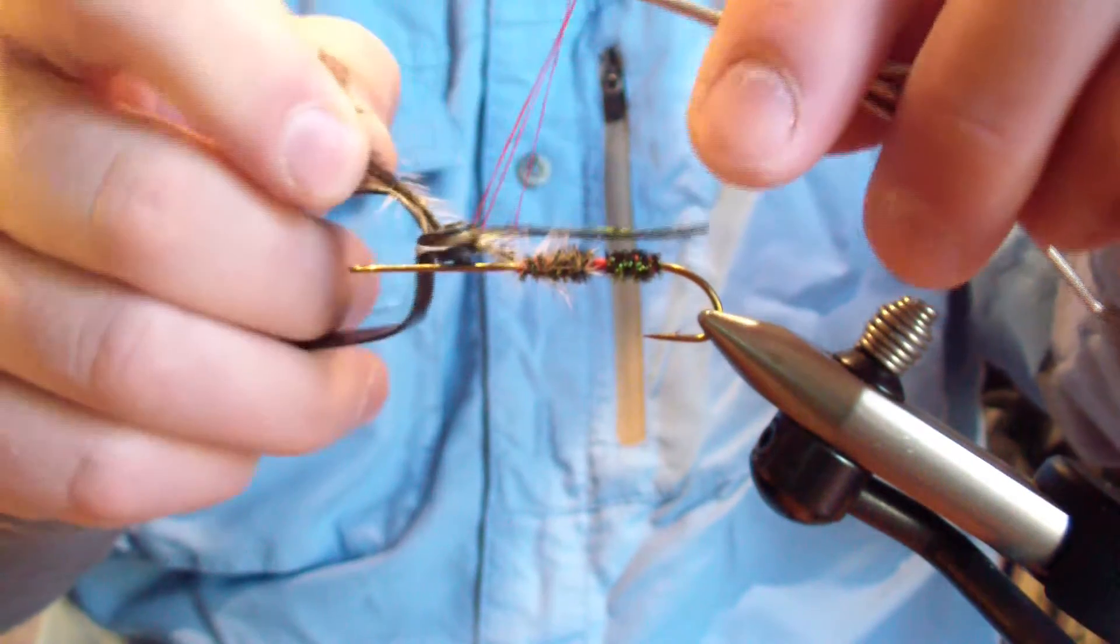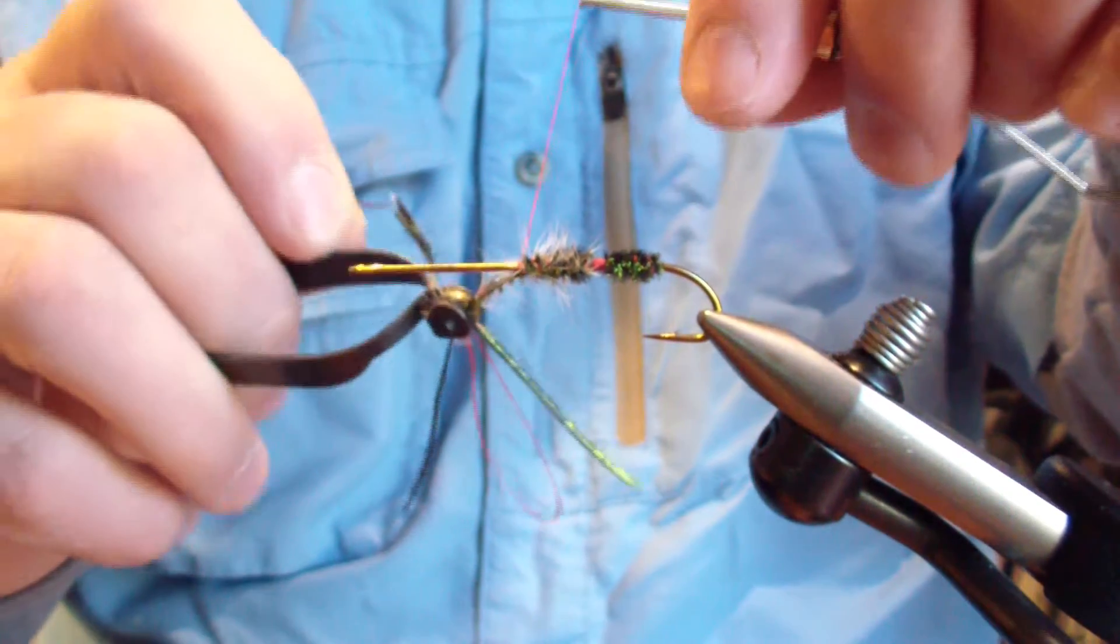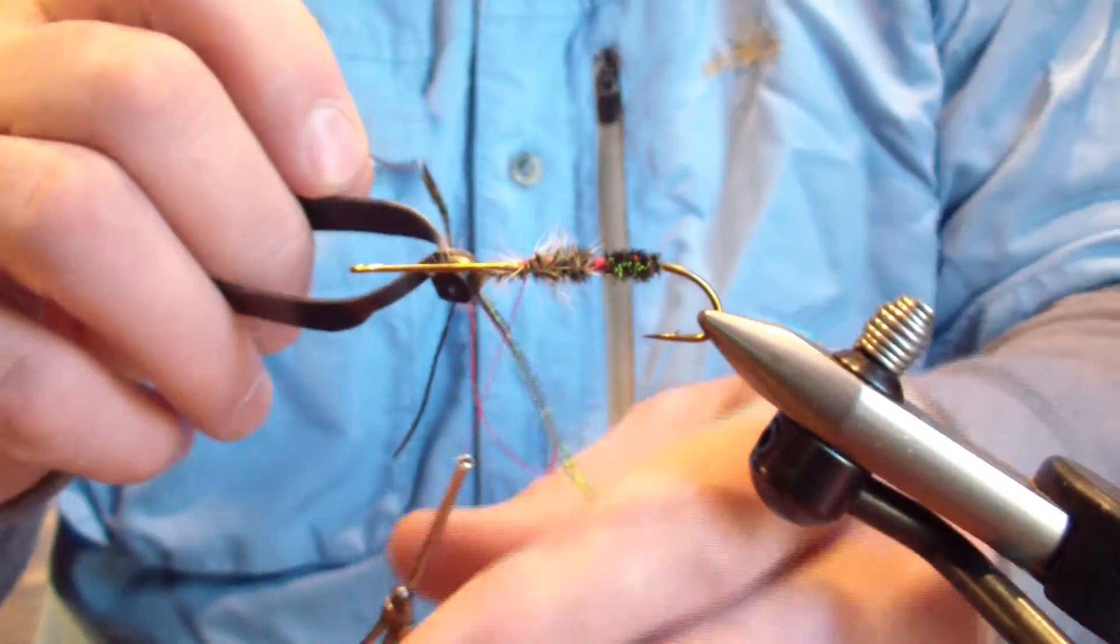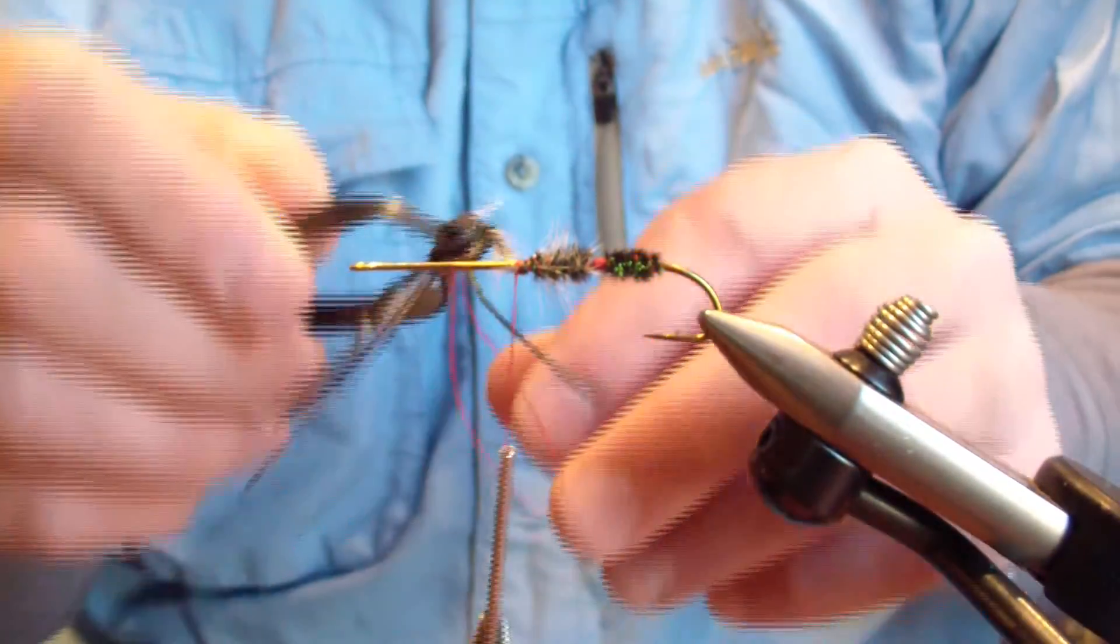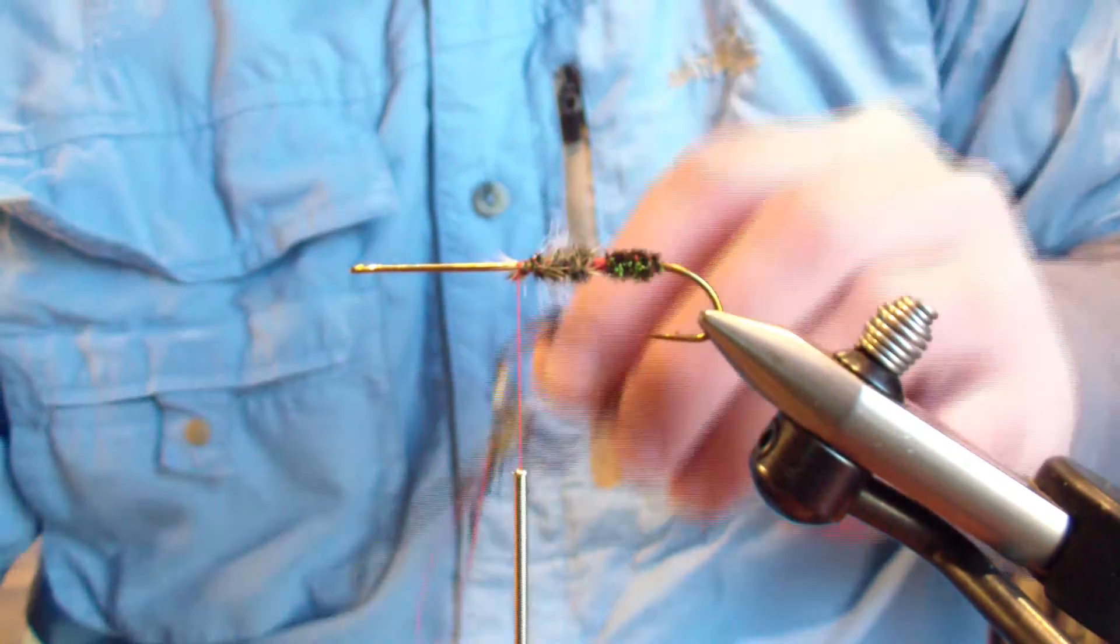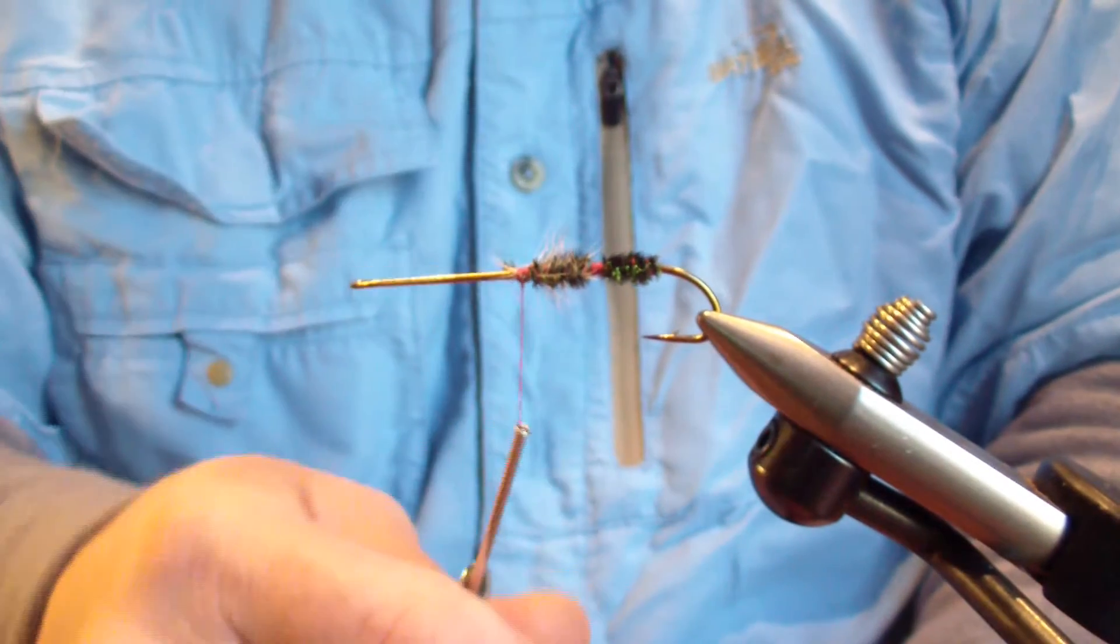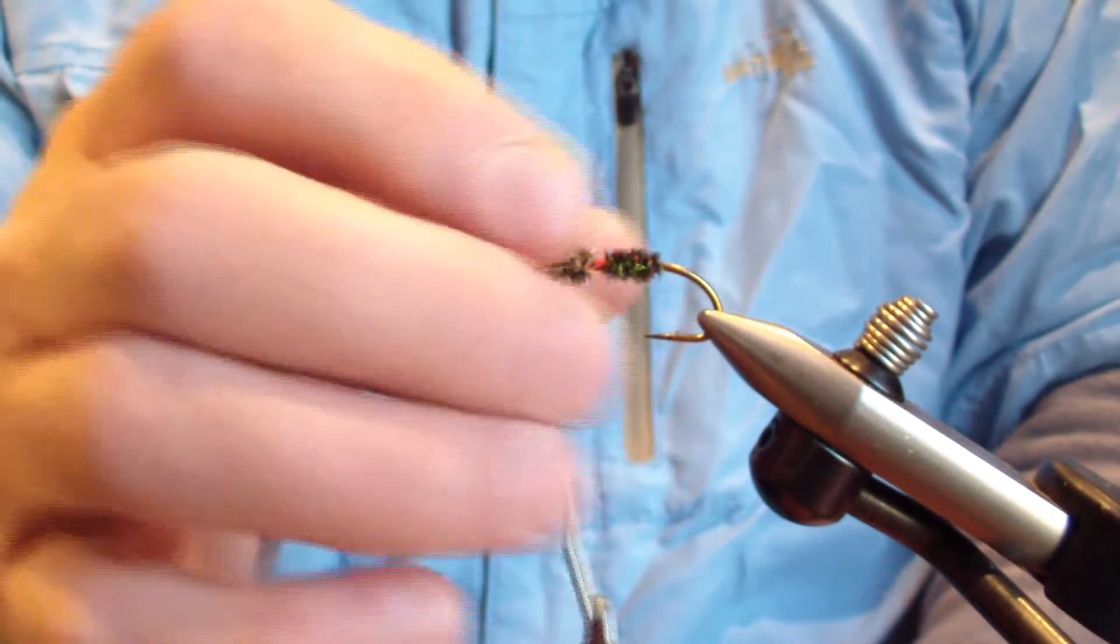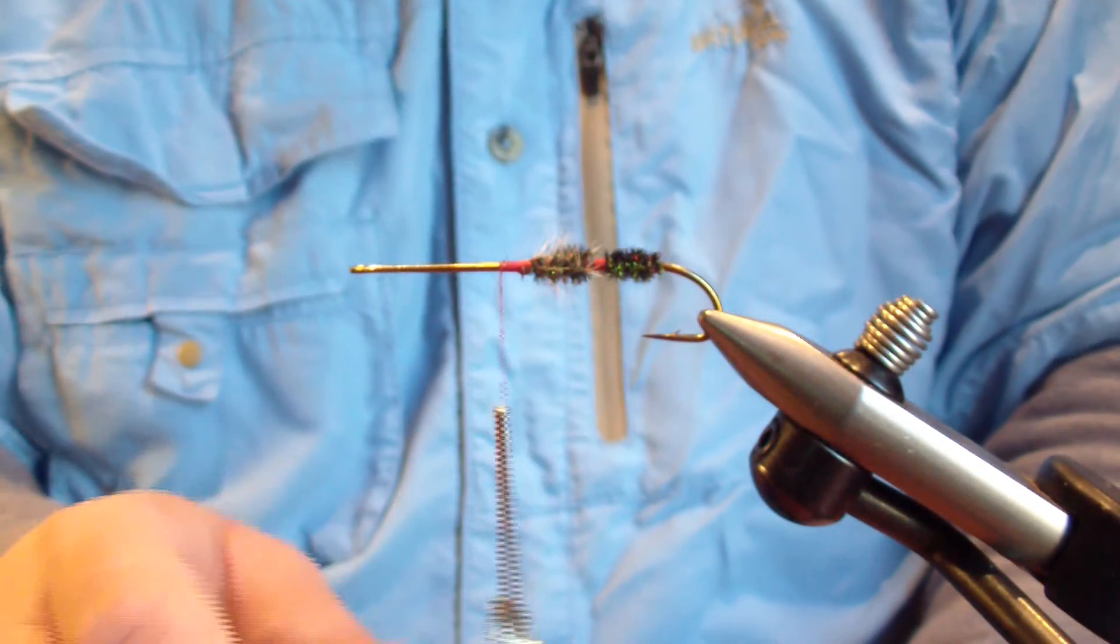And I grab my hackle with a little bit of a tangle. And that will give you your hackled dubbing brush. I use this technique for the Griffiths Max and I've been using it for a Griffiths Gnat for years. Works far better than I feel than the standard technique.